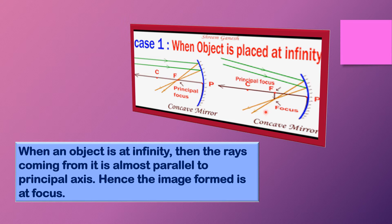The meeting point of the two reflected rays is this one. So if you draw a straight line on the principal axis from that particular intersection point, you will get the image. That means the image will form at the focus.